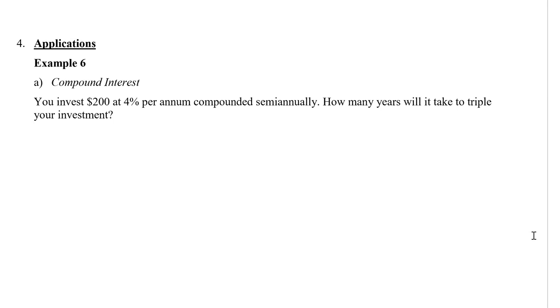We'll take a look at a compound interest question. You invest $200 at 4% per annum, which just means 4% per year. It's compounded semi-annually. How many years will it take to triple your investment? We're going to use the formula A equals P times 1 plus R divided by N, all to the power of N times T.